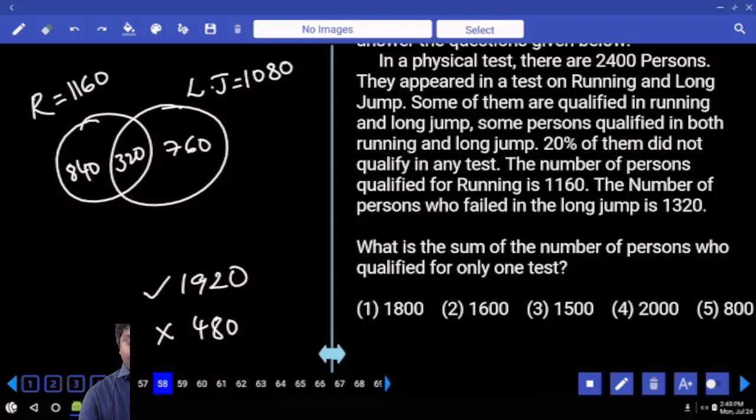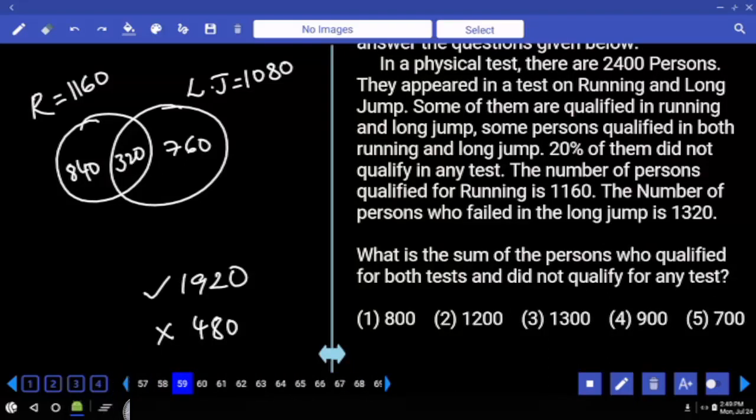Next: What is the sum of persons who qualified for both tests and did not qualify for any test? The question is difference only. Sum is equal to 800, first option.